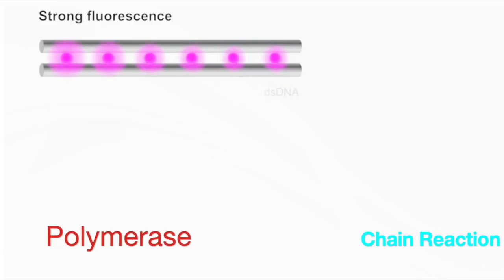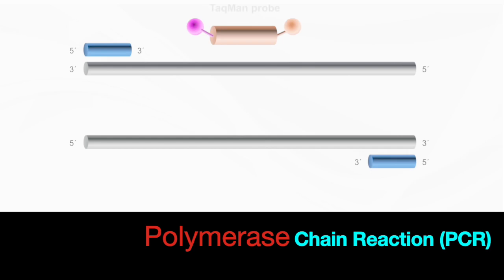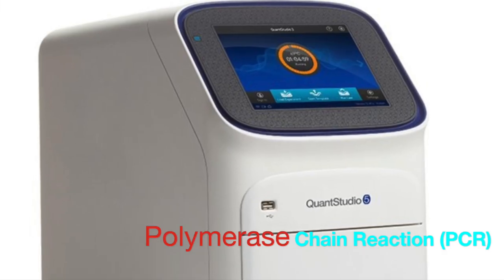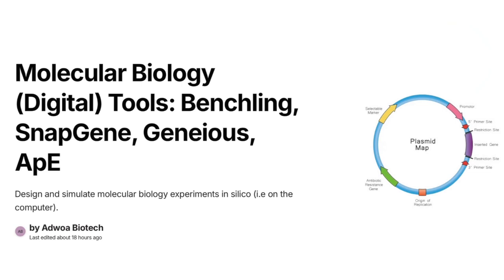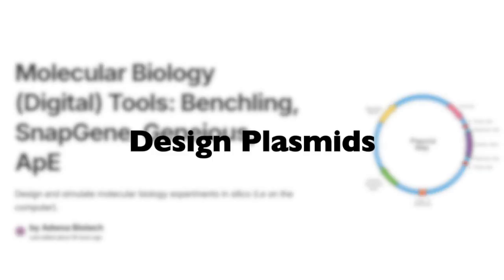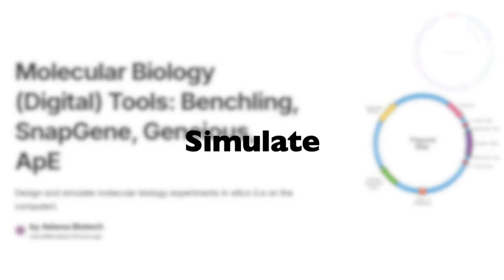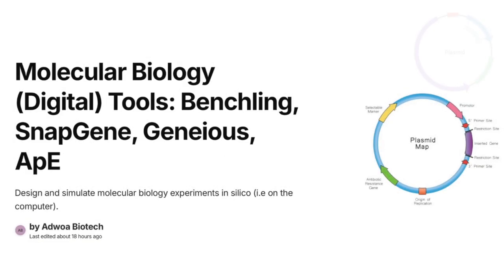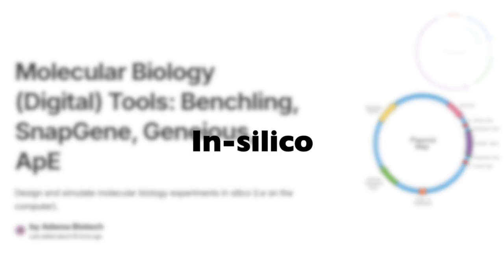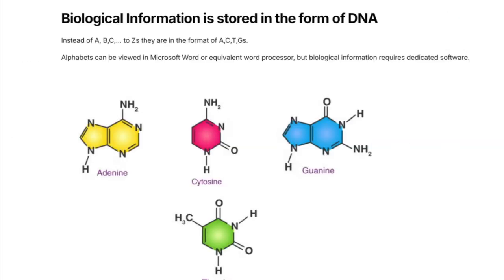Just like there are molecular biology tools used in the laboratory — in the wet lab — there are digital or web-based tools that go along with it. It's important to start to get a feel for these as well, because if you need to design plasmids, for instance, it's just so much easier if you're doing it on a tool like this. These tools allow you to design and simulate molecular biology experiments on the computer, which is termed as in silico. Why do we need these tools? Well, biological information is stored in the form of DNA.